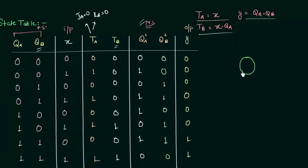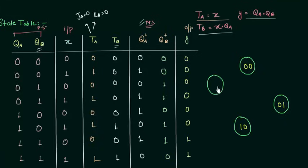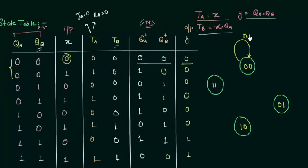We have everything to make our state diagram. There are four states: S0 (QA=0, QB=0), S1 (QA=0, QB=1), S2 (QA=1, QB=0), and S3 (QA=1, QB=1). When on S0 with input 0, the next state is 0,0 — same state S0 — with output 0. When input is 1, I go to state 1,0 which is S2, with output 0.